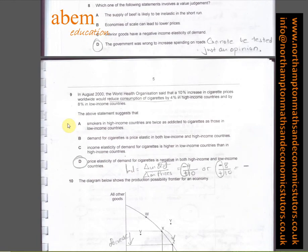In question number nine, in August 2000, the World Health Organization said a 10% increase in cigarette prices worldwide will reduce consumption by 4% in high income countries and by 8% in low income countries. I've put down D as the answer because the PED for cigarettes is negative in both high income and low income countries.